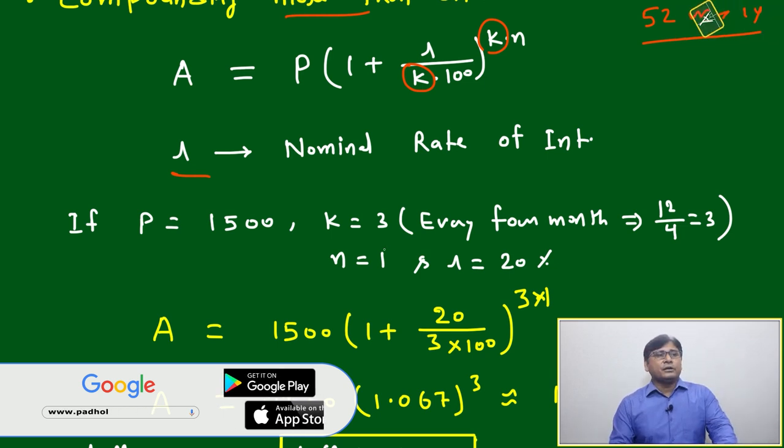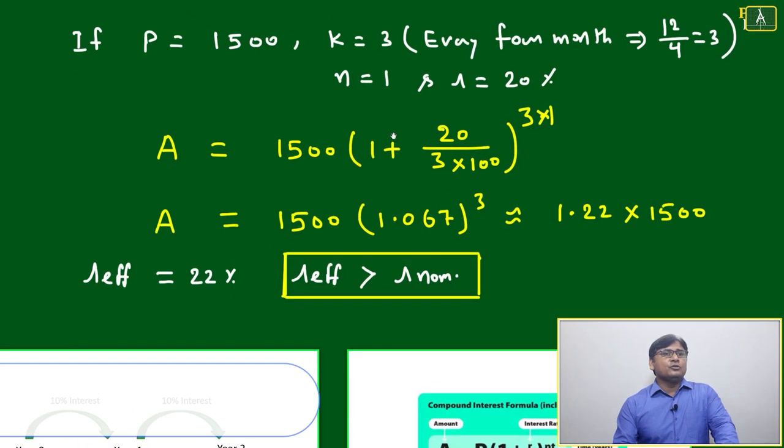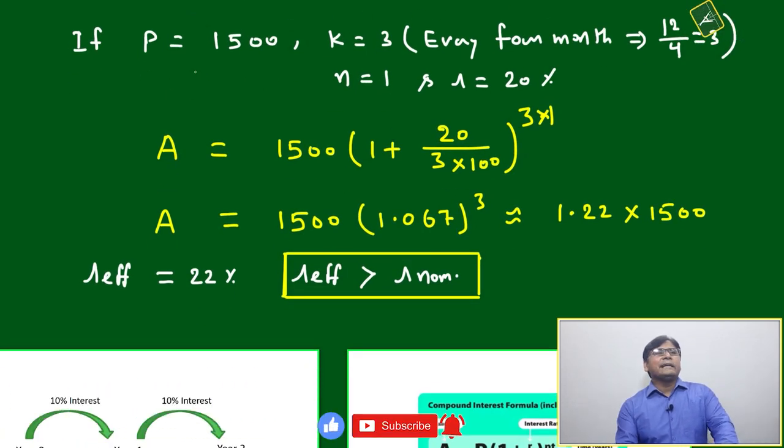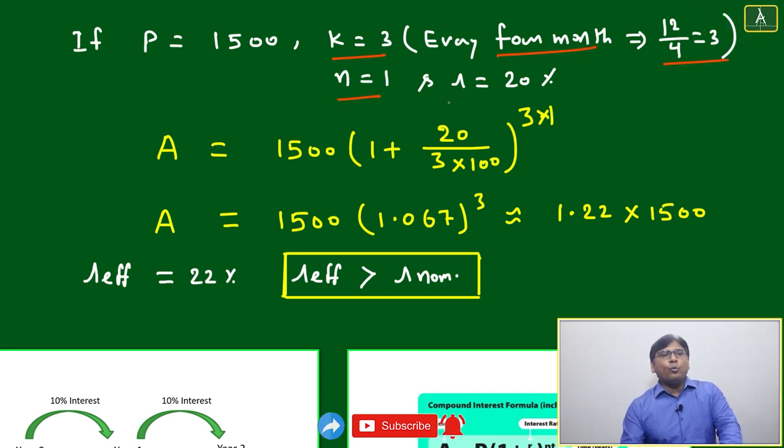Let's take an example: P = 1500, k = 3 (meaning every four months compounding will happen), and n = 1 for easy understanding.